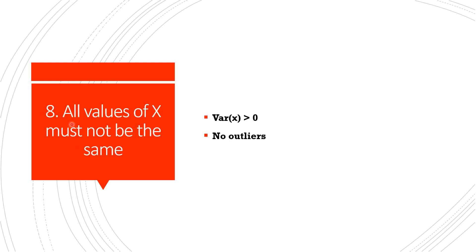Now the eighth assumption says that all values of x must not be the same. That is, the variance of x must be a positive number. Also, there can be no outliers in the values of the x variable, that is, values that are very large in relation to the rest of the observations.